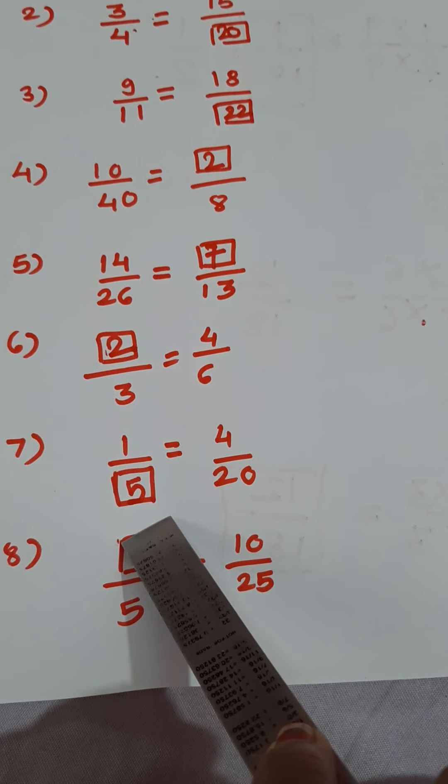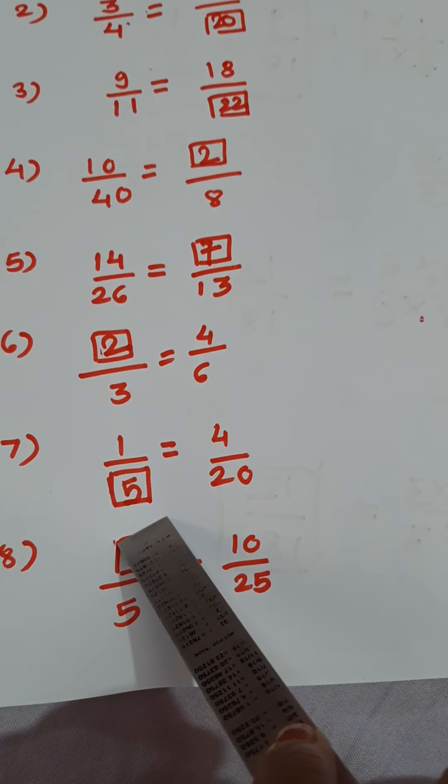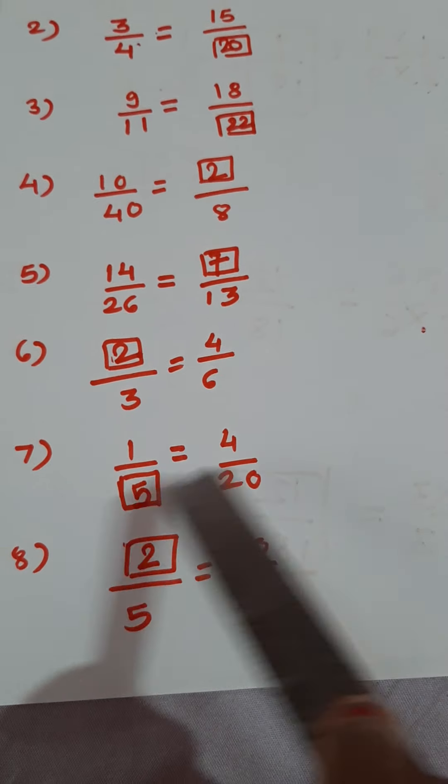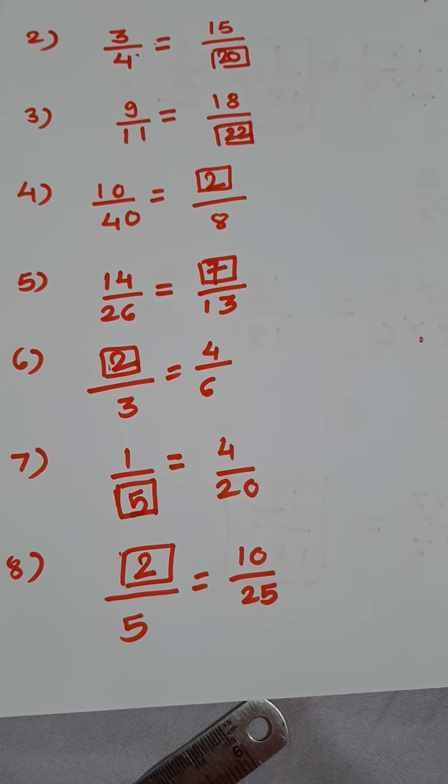Next one, dash upon 5 is equal to 10 upon 25. 5 5's are 25. So 2 5's are 10. This way. Okay. Thank you. Have a good day.